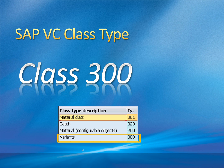Regarding class type: in SAP, classes are categorized by class type number. For variant configuration, we use class type 300, which is the most common one used to create and categorize variants. Class type 200 is also used, and there are other classes such as batch class 023 and material class, used for different purposes, but we are focusing on class type 300 which is used for variant configuration.